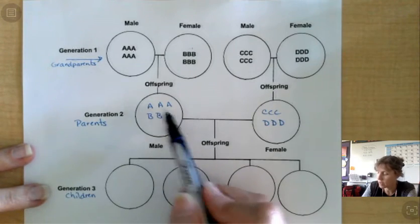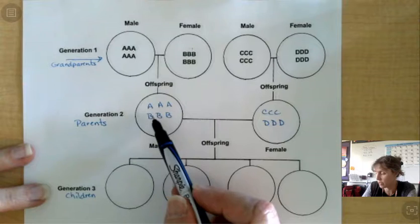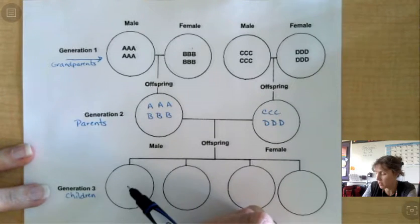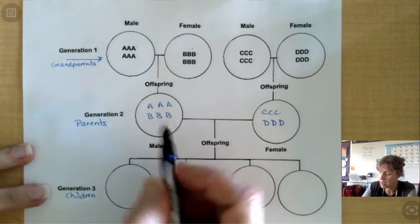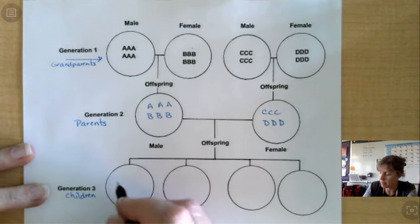So for this male, for this dad, I'm just going to give this first offspring, this first kid, I'm going to give A, B, B just for fun.